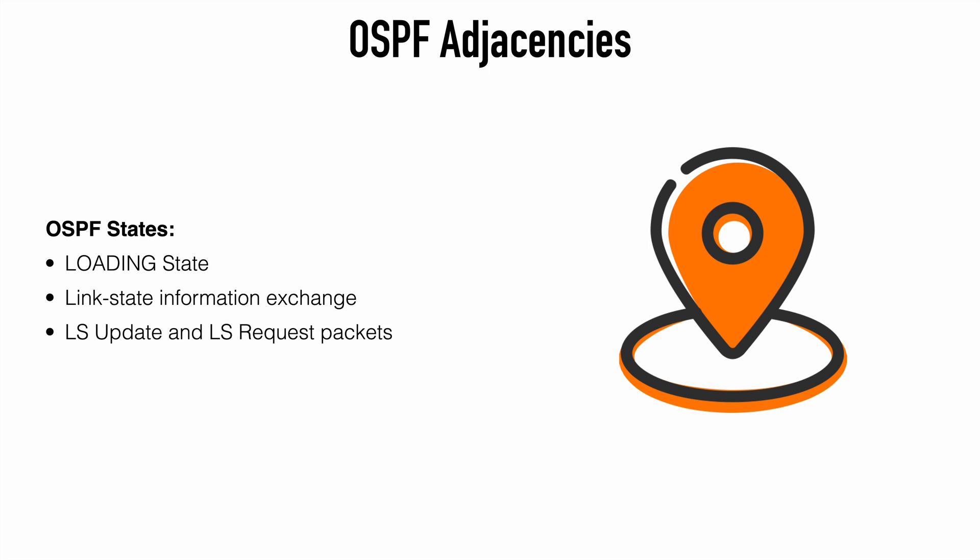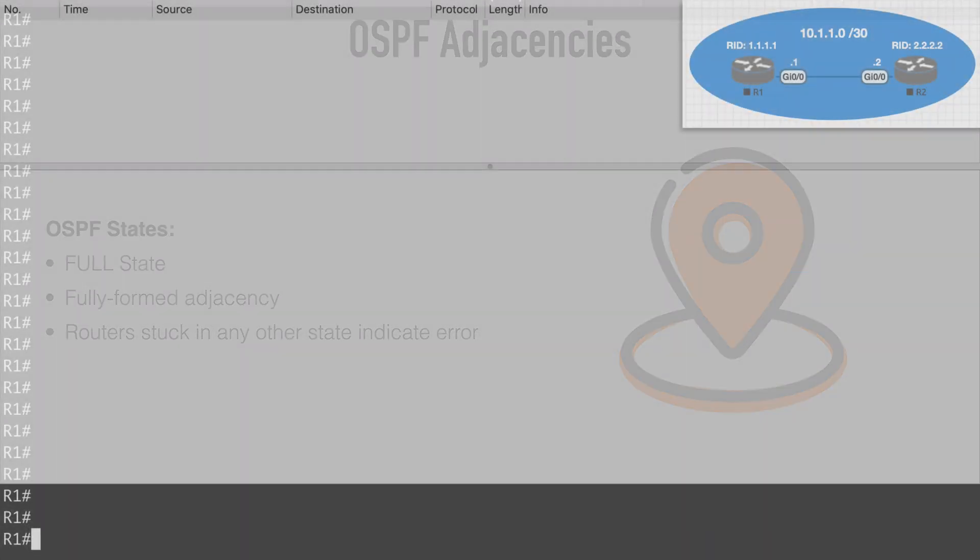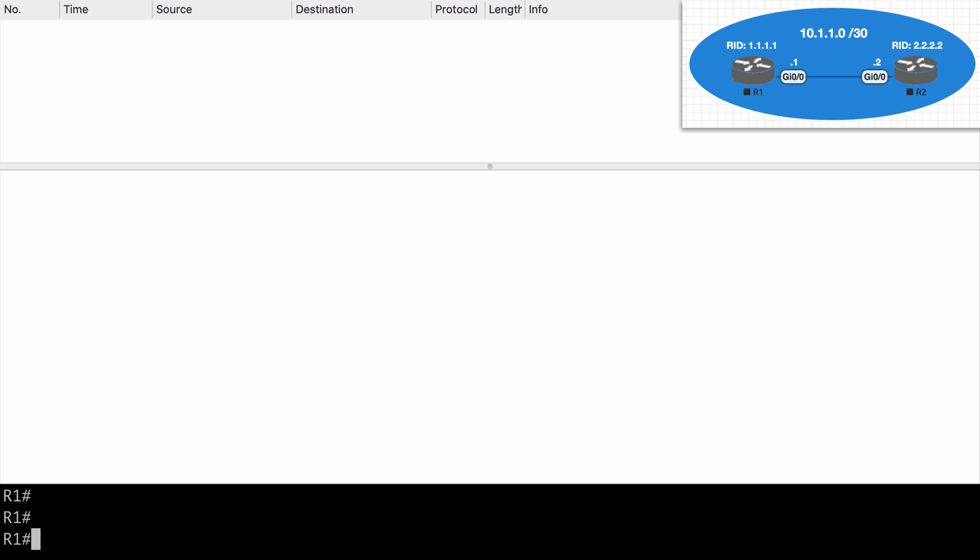Next we have the loading state. This is where the actual exchange of link state information occurs. Based on the information found in the DBD packets, routers will send link state request packets to a peer. Any outdated or missing LSAs would be requested through these link state request packets. The neighbor will respond with link state update packets providing the requested information. All link state requests and update packets are required to be acknowledged by the neighbor as well. Finally, we have the full state where routers have formed a full adjacency. Once all LSAs are exchanged and everything is acknowledged, our databases are synchronized. If we see a router stuck in any other state, this indicates trouble forming a full adjacency. So let's take a look at this in a topology using Wireshark.